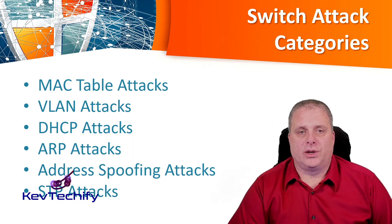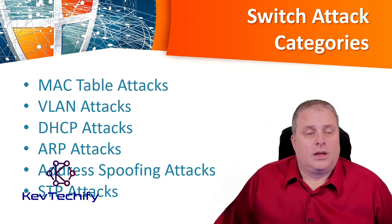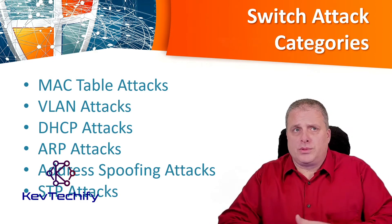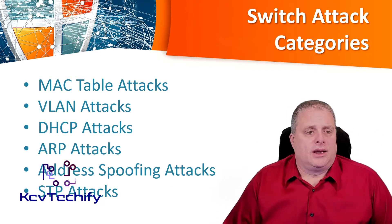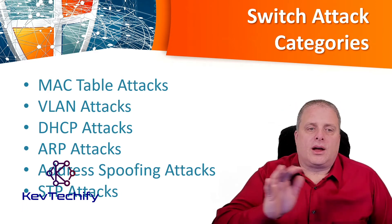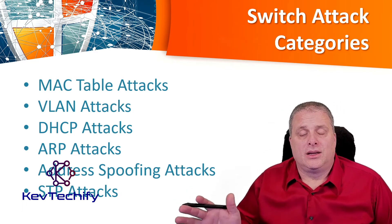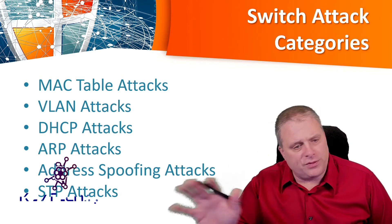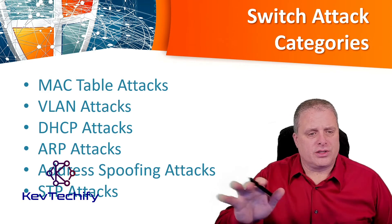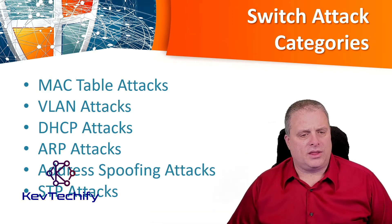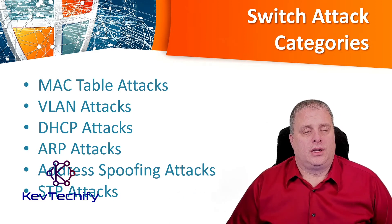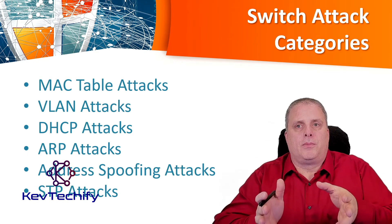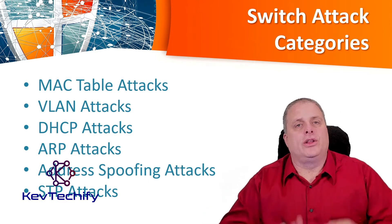Several attacks can happen at the switch using Layer 2 protocols. We have MAC table attacks, including MAC address flooding attacks. We have VLAN attacks, including VLAN hopping and VLAN double tagging, that can get you into places where you're not supposed to be. There are also DHCP starvation and spoofing attacks, ARP attacks involving address spoofing and poisoning, address spoofing where a device pretends to be a different device, and spanning tree attacks that let a threat actor pose as a man-in-the-middle and see all data crossing your network.